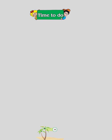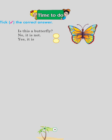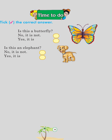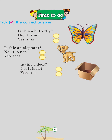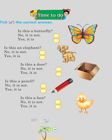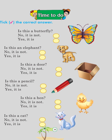Time to do. Tick the correct answer: Is this a butterfly? Yes, it is. Is this an elephant? No, it is not. Is this a door? No, it is not. Is this a pencil? Yes, it is. Is this a hen? No, it is not. Is this a cat? Yes, it is.